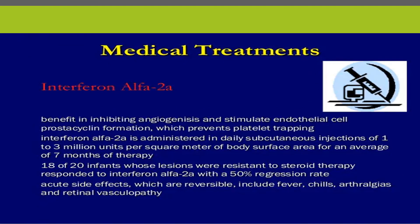Interferon alpha-2 is another available medical treatment. Its benefits include inhibiting angiogenesis and stimulating endothelial cell prostacyclin formation, which prevents platelet trapping. It is administered as a daily subcutaneous injection of 1 to 3 million units per square meter of body surface area for an average of seven months. In one study, 18 of 20 infants with lesions resistant to steroid therapy responded to interferon alpha-2 with a 50 percent regression rate. Acute and chronic side effects such as fever, chills, and retinal vasculopathy should be monitored.